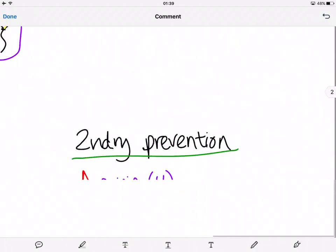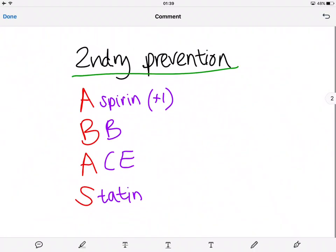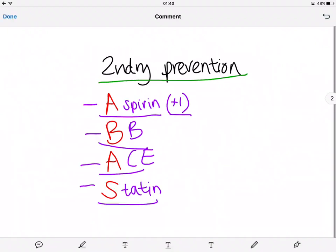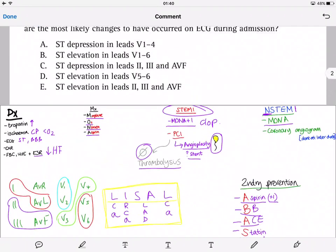Anyone who has had a STEMI or NSTEMI needs secondary prevention. The mnemonic I use is ABASS: aspirin plus one like clopidogrel, beta blocker because most patients will be tachycardic, ACE inhibitor, and statin because they're quite high risk patients.